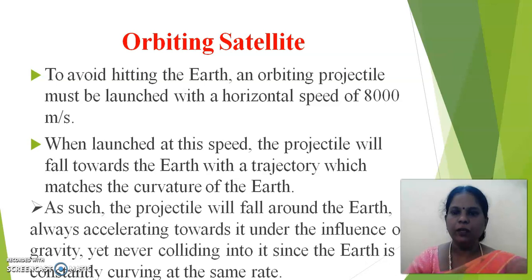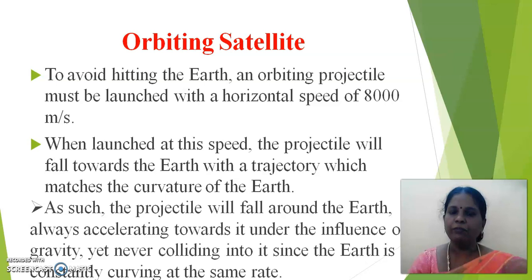Combining these two factors: to avoid hitting the earth, an orbiting projectile must be launched with a horizontal speed of 8,000 meters per second. When launched at this speed, the projectile will fall towards the earth with a trajectory that matches the curvature of the earth. As such, the projectile will fall around the earth, always accelerating towards it under the influence of gravity, yet never colliding into it since the earth is constantly curving at the same rate.